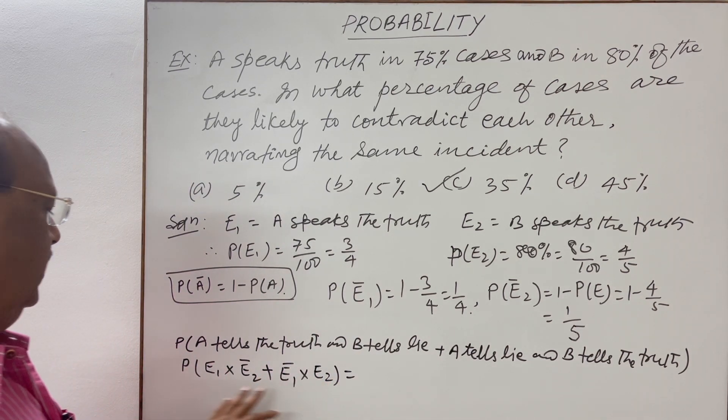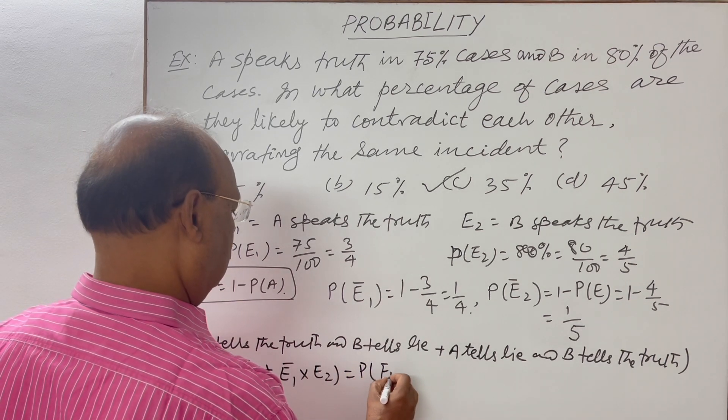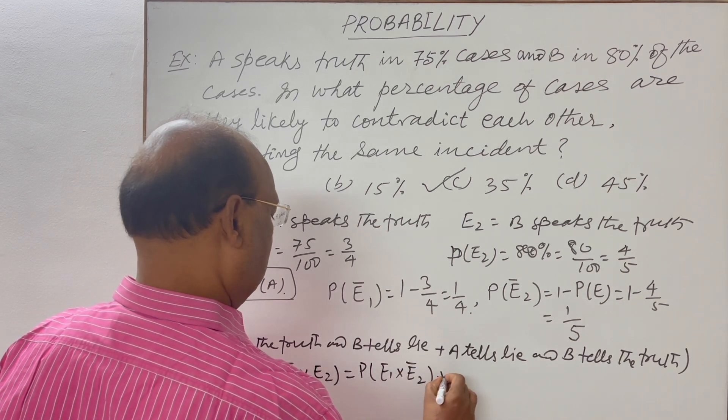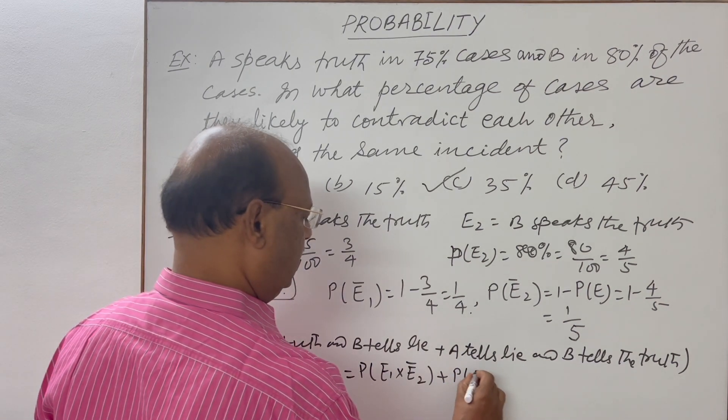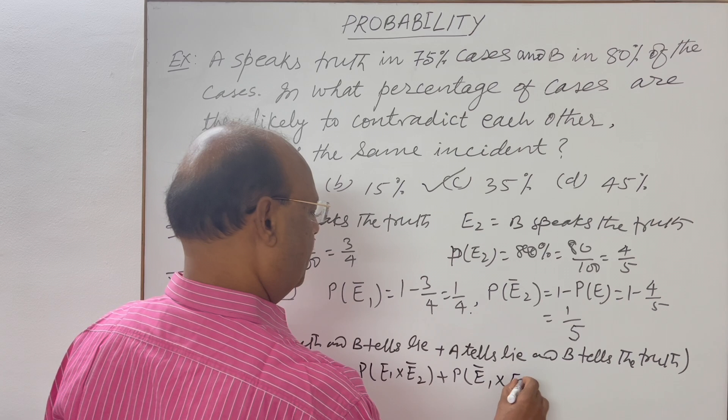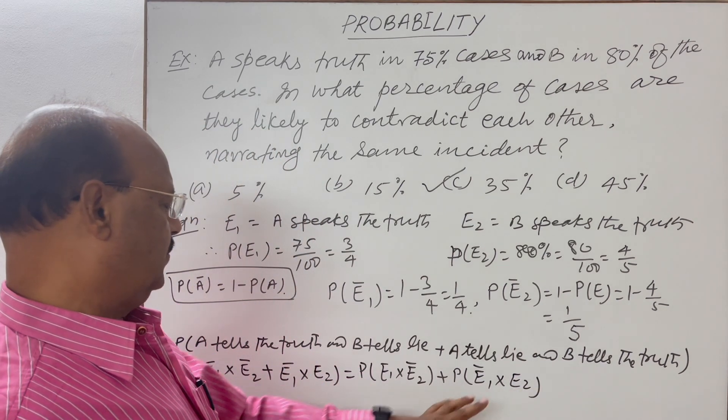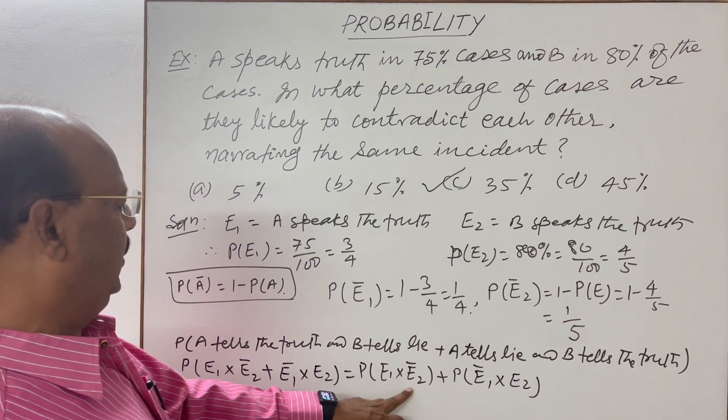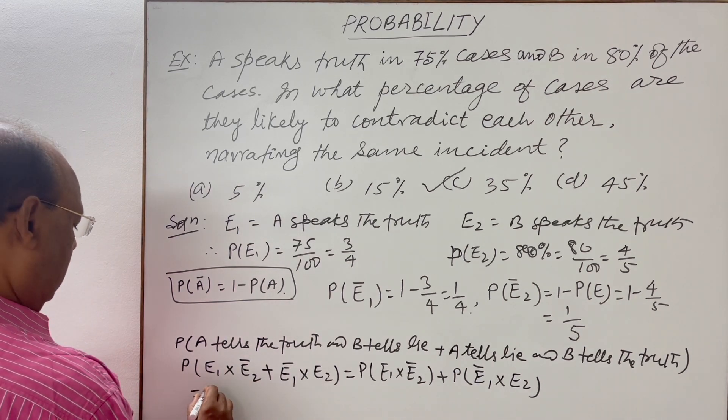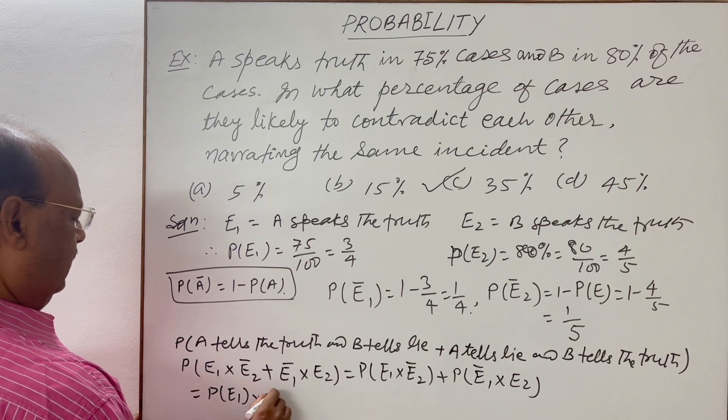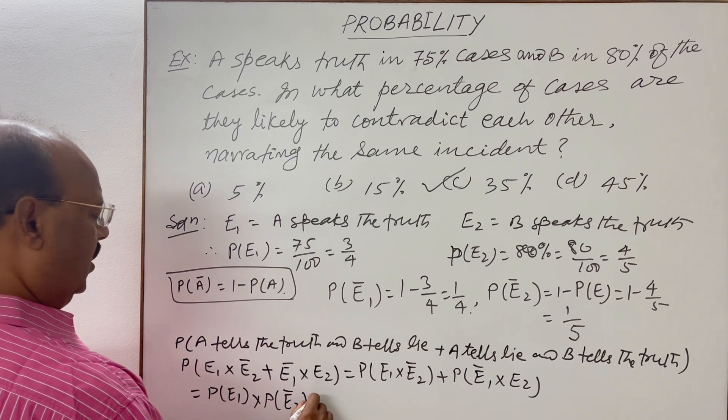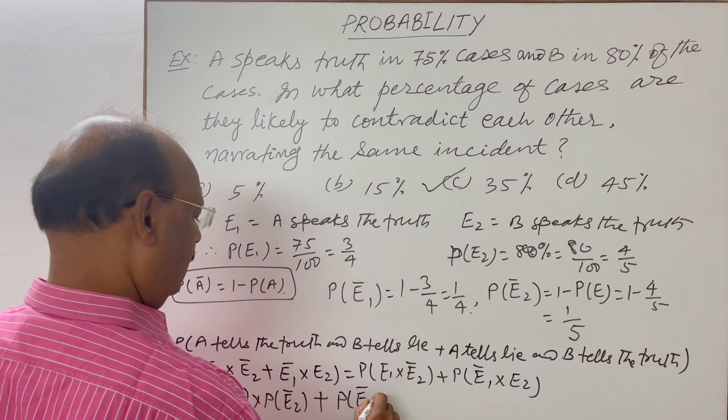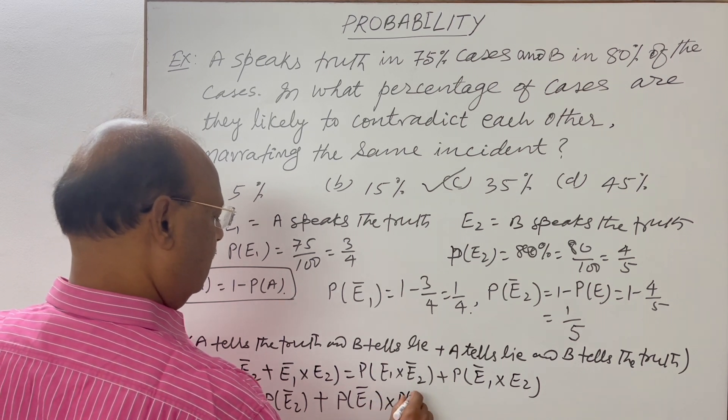This can be written as probability of E₁ into not E₂ plus probability of not E₁ into E₂. So now let us put the values here. This will be equal to probability of E₁ into probability of not E₂ plus probability of not E₁ into probability of E₂.